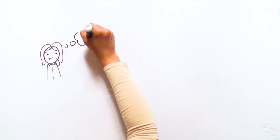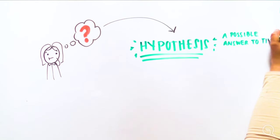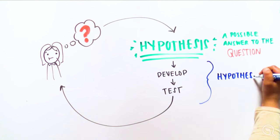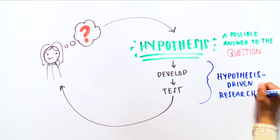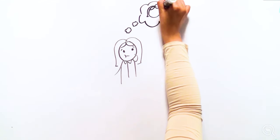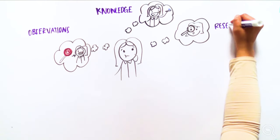Once we know our scientific question, we can develop a hypothesis, which is a possible answer to the question. Developing and testing hypotheses is the core of hypothesis-driven research. Let's take a closer look. Most of the time, forming a hypothesis requires having existing knowledge, making observations, and doing some preliminary research.